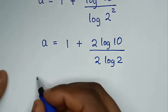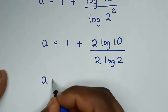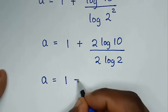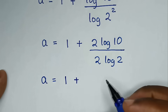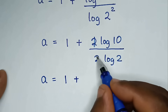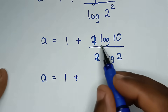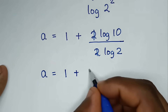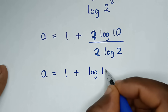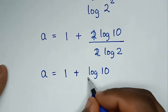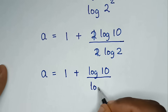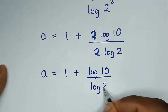So here it will be a is equal to 1 plus. To simplify, this 2 will cancel this 2, so it will be log of 10 over log of 2.